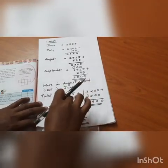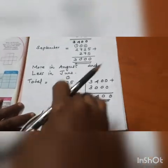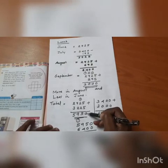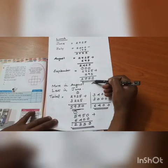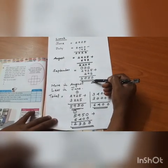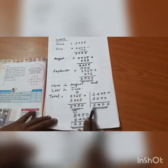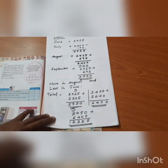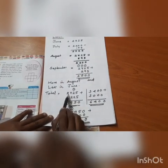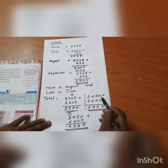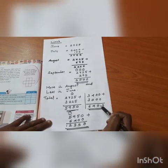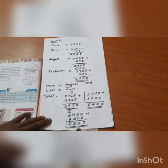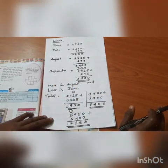We also need to find the total. First add June and July, then add August and September, then finally add these 2 totals to get the grand total. Add June and July, then add August and September, and finally add these 2 sums to get the total amount.